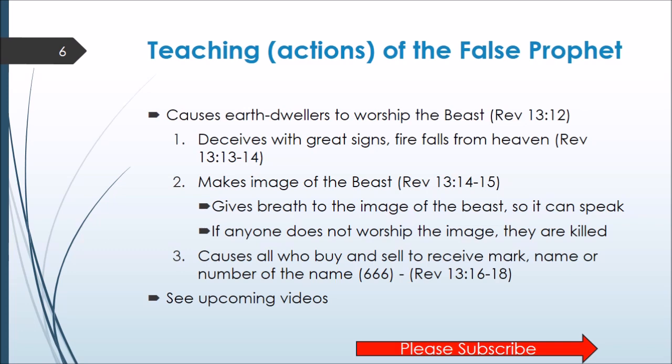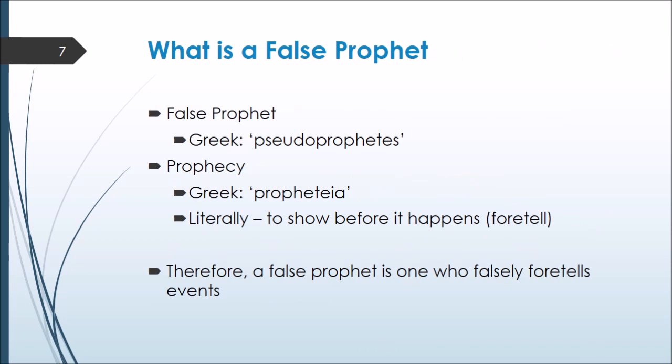It's important to understand what a false prophet is. It's the Greek word 'pseudo,' meaning false, and 'prophetis,' meaning a prophet — a literal transliteration. A prophet literally means to speak before: 'pro' means before, 'phetis' is to speak, to foretell events that are going to happen. Therefore a false prophet is simply one who falsely foretells events. The Bible is full of prophecy because that's what our hope is about — we're all hoping for the return of Christ so we can be glorified with him.